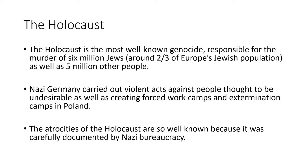The Holocaust is the most well-known of these genocides. It was responsible for the murder of 6 million Jews, which was about two-thirds of Europe's Jewish population, as well as 5 million other people from groups the Nazis deemed undesirable — such as the Roma, the handicapped, and others. Nazi Germany carried out incredibly violent acts against people thought to be undesirable, creating forced labor camps and extermination camps in Poland and elsewhere in Eastern Europe. The atrocities of the Holocaust are so well known because they were carefully documented by the Nazi bureaucracy — they kept records of everything they did, when they did it, and even why.